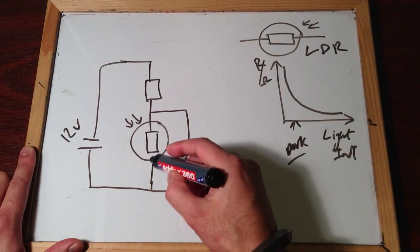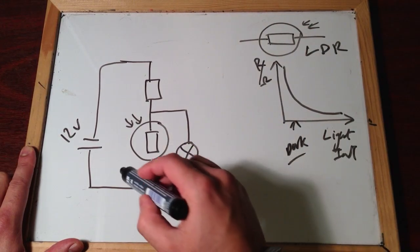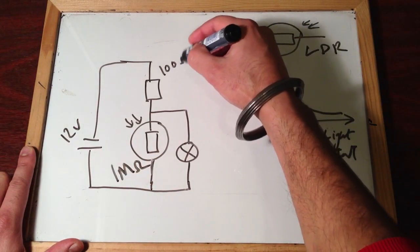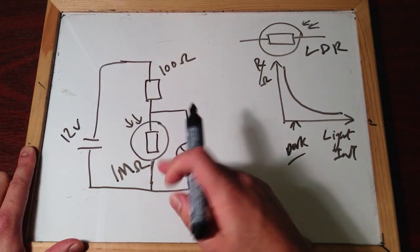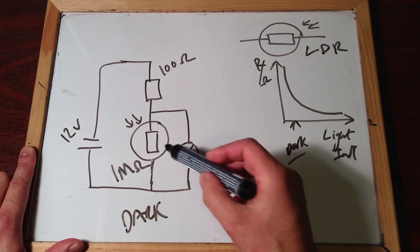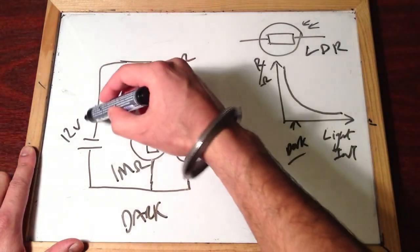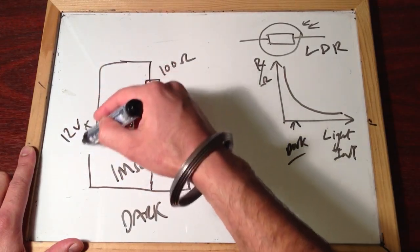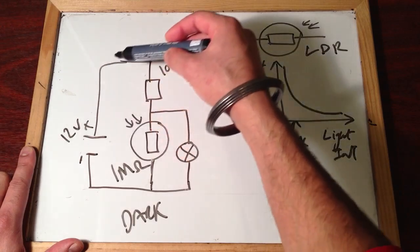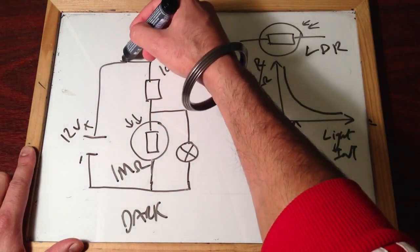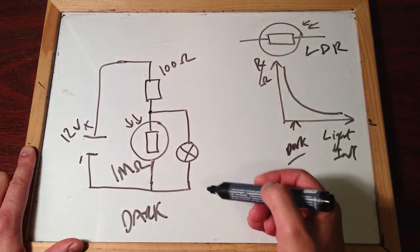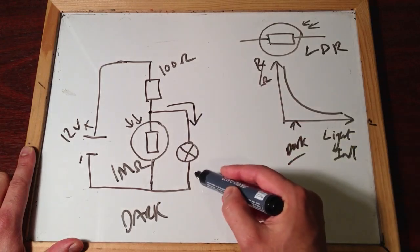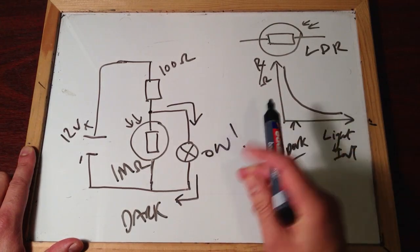Now, what happens is, when it's dark, the LDR here has high resistance, let's just say it has one mega ohm worth of resistance, this resistor here, let's just say it's fixed at 100 ohms. When it's dark, so in the dark situation, you've got loads and loads of resistance here, which means current that's flowing from, let's just change these, to positive here, and negative here. Current that flows from the positive side to the negative side, when current gets to this junction here, because this is so high in resistance, most of the current will want to flow down here, which means the light will be on, in the dark.